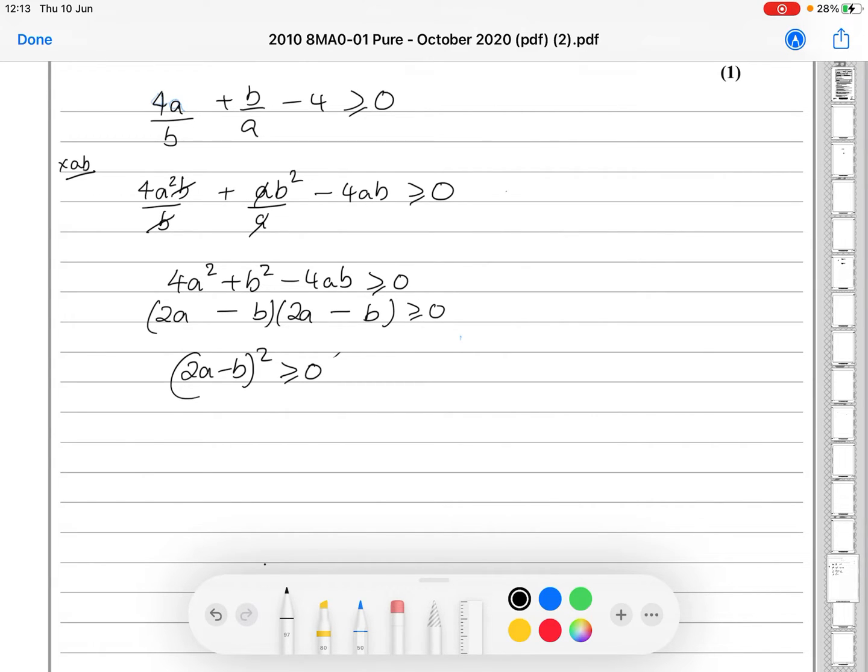So, this gives you 2a minus b all squared is greater than or equal to 0. Well, it is, because anything squared is greater than or equal to 0. Therefore,